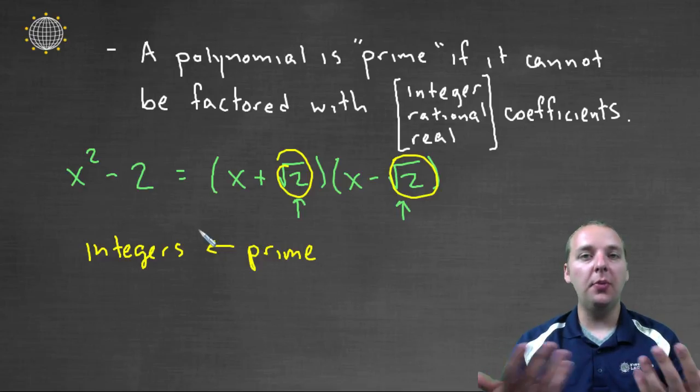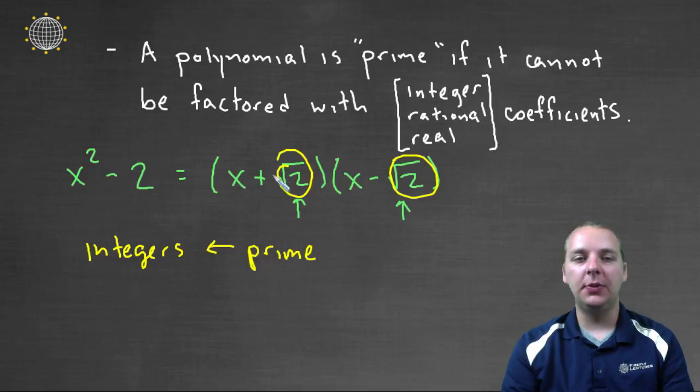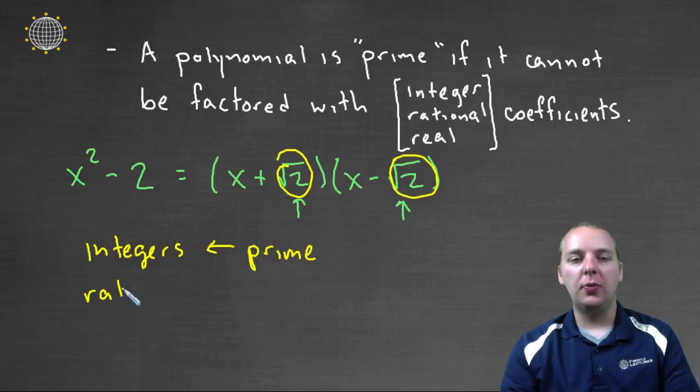Now square root of two times the square root of two multiplies to two, and you can make these add to zero with a plus and a minus, but they're not integers. And so we have to be a little careful. So even when you're talking about rational coefficients, this would be considered prime.